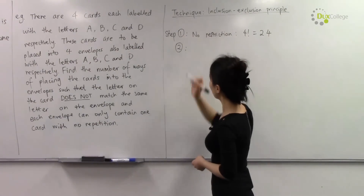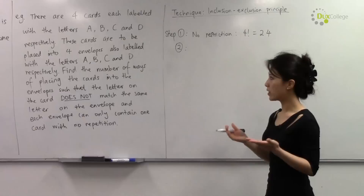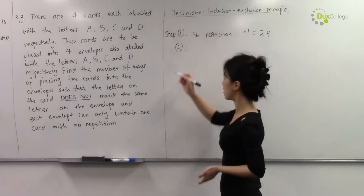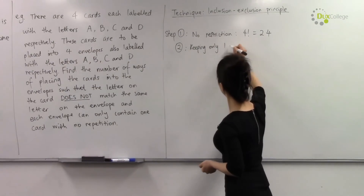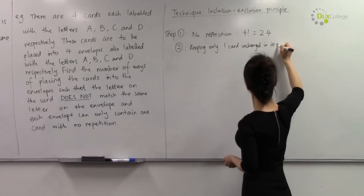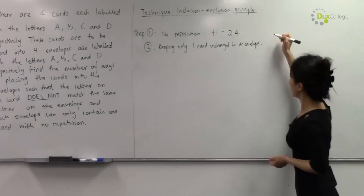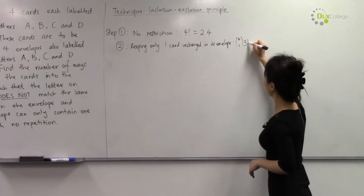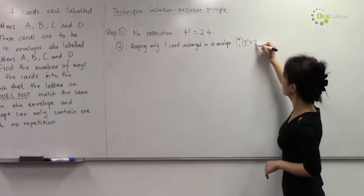Step two is to keep one of the four cards unchanged in its envelope — for example, keeping card A in envelope A unchanged and arranging the remaining three cards. We choose one card out of four and arrange the remaining three, giving four times three factorial, which is four times six, equals 24.